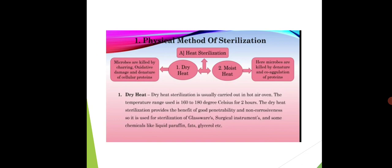Moving on to physical methods of sterilization — first is heat treatment. There are two types of heat sterilization: dry heat and moist heat. In dry heat, microbes are killed by oxidative damage and denaturation of cellular proteins. Dry heat sterilization is usually carried out in a hot air oven.